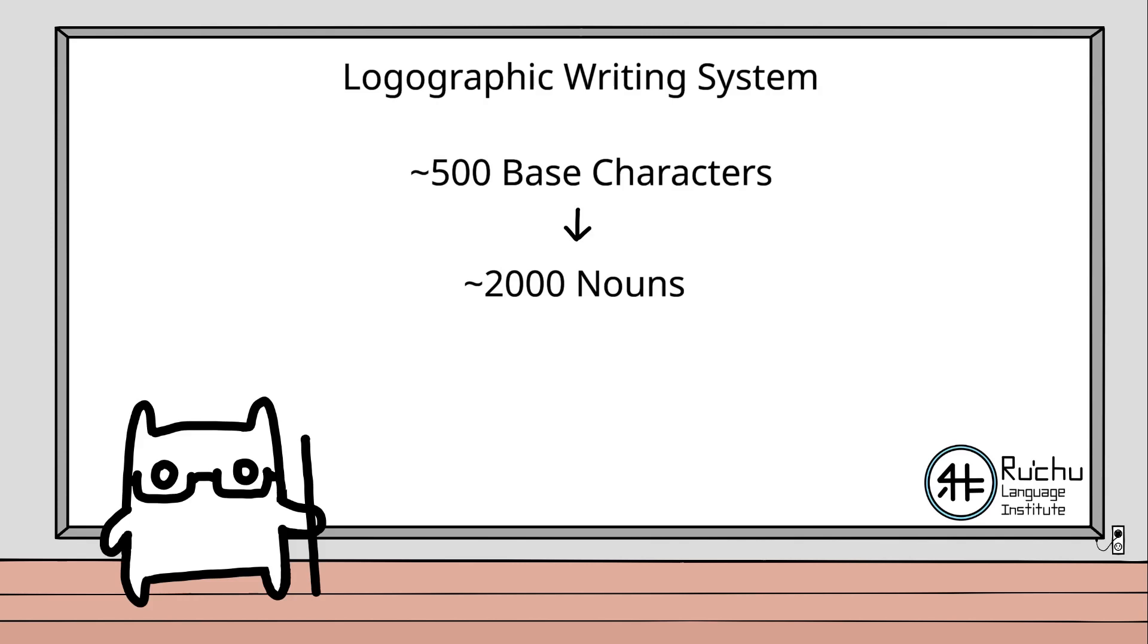Ruchu uses a logographic writing system. This means that each character is its own noun or grammatical component. As of this video, there are approximately 500 base characters in Ruchu, which combine to create compound words. Overall, there are nearly 2000 nouns in the Ruchu language, but you do not necessarily need to know all of them to be conversational.